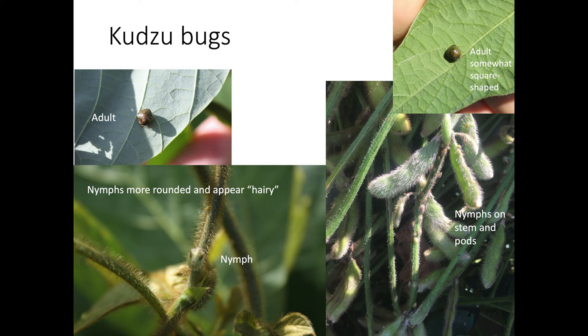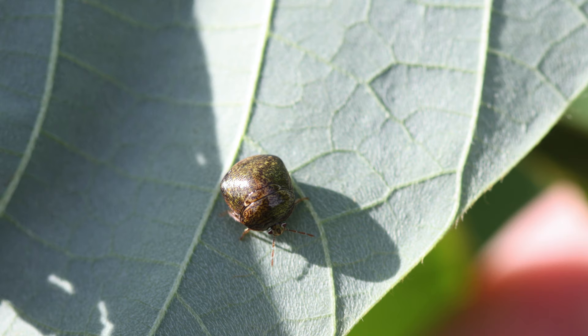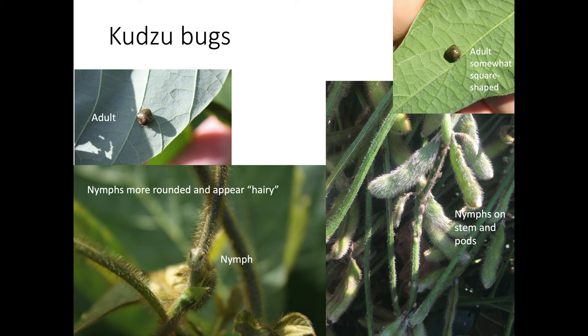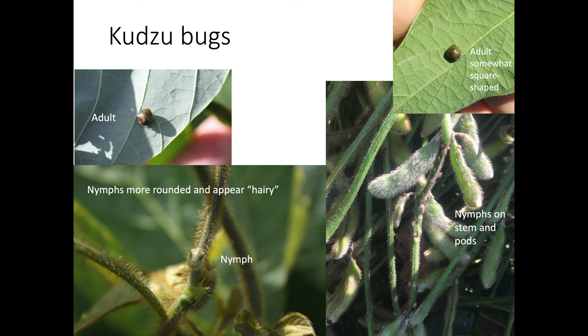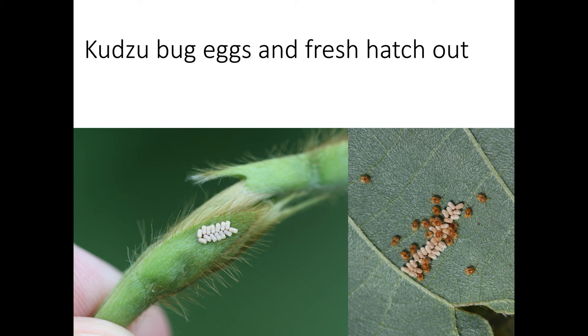Infestations of kudzu bugs have been reported from most soybean-producing areas of Tennessee. Adult kudzu bugs are about the same size as adult lady beetles — approximately a quarter inch long, almost square in shape, with a brown to olive-green hue. The immature stages are more rounded, smaller, and look hairy. Kudzu bugs are generally found on the stems where they feed on plant juices — they do not feed on seeds. Eggs are light-colored, barrel-shaped, and placed on leaves or other plant parts in two rows. It takes many kudzu bugs to cause economic damage, but infestation levels may reach hundreds of bugs per plant.